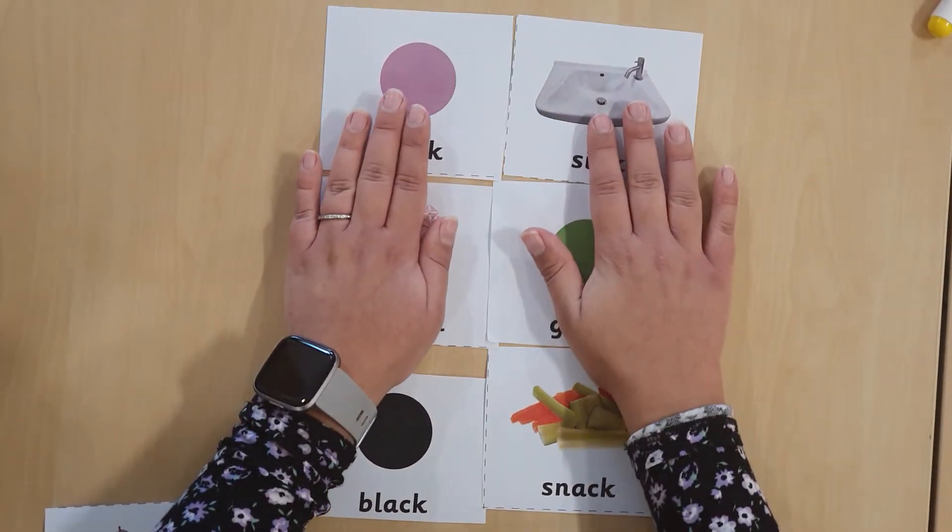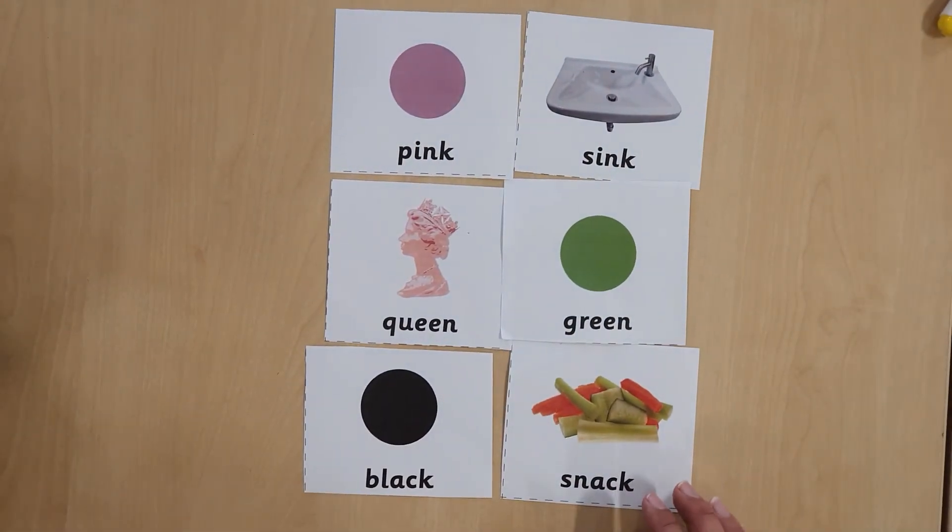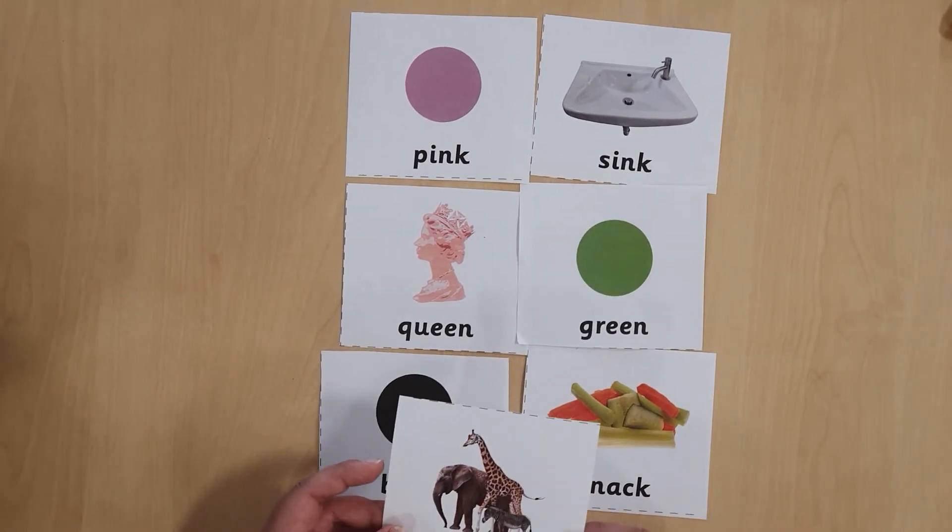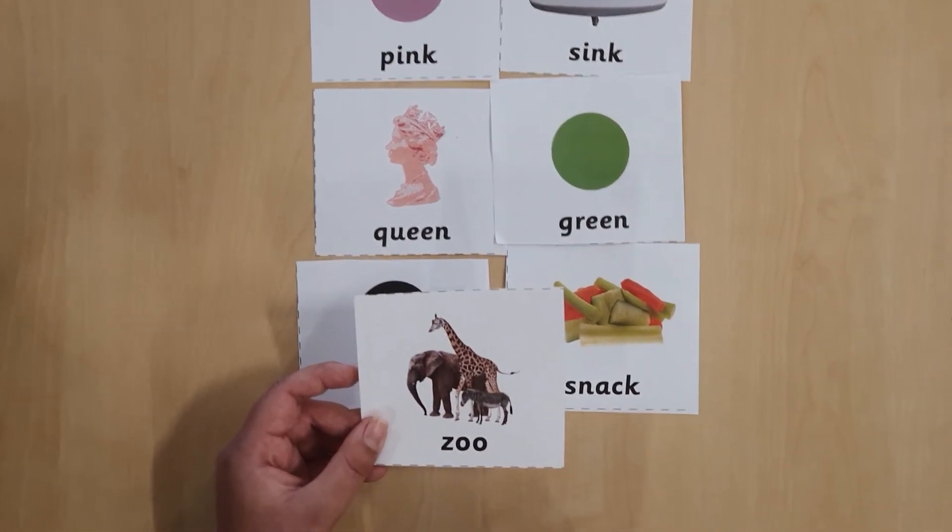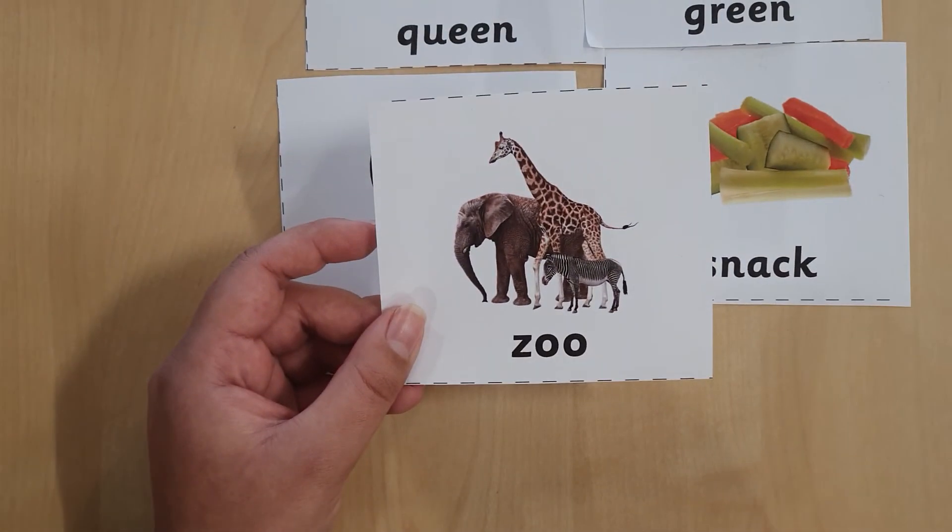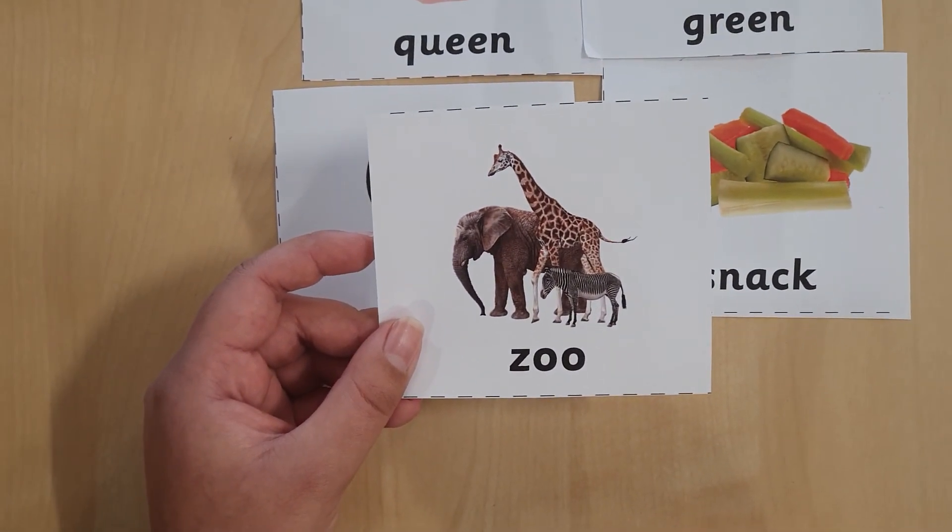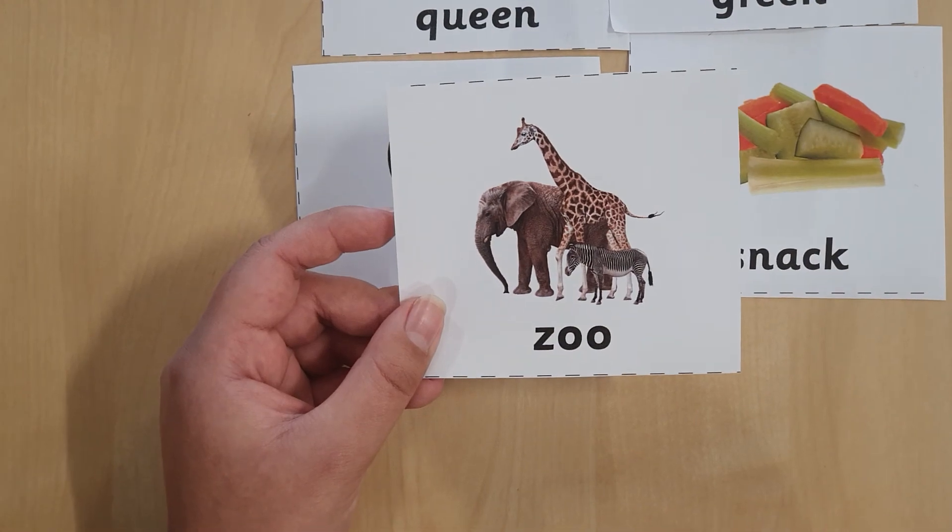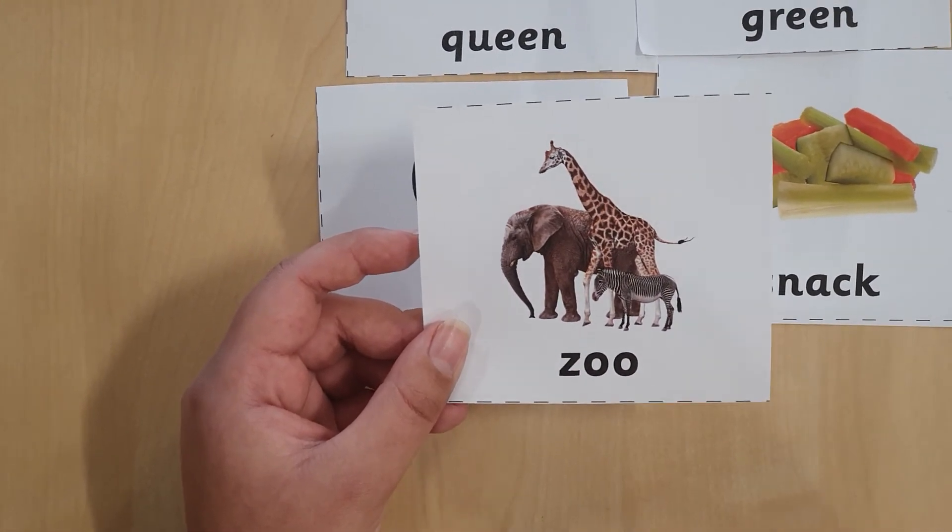Well done on finding all the matches with me. I've got a challenge for you. Can you think of a word that could rhyme with zoo? Have a think. How many can you think of? Well done. Happy rhyming everybody. Bye.